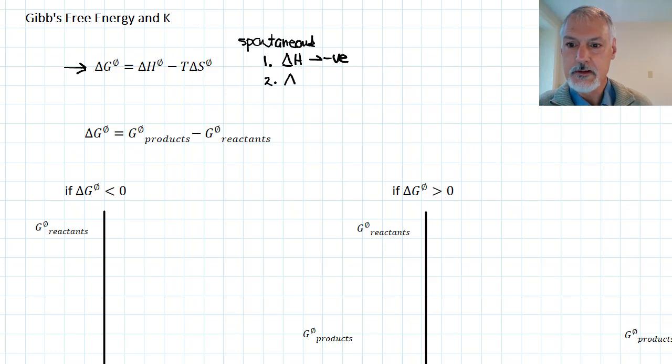At the same time, we wanted its entropy to be a positive value. We wanted the spread of energy to be increasing as time went on. If we had both of these things in our favor, we knew the reaction was always going to be spontaneous.